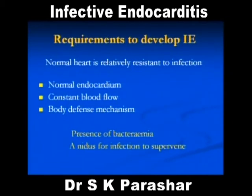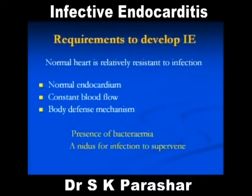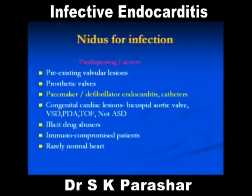There have to be two important things: a presence of bacteremia — unless there is a bacteremia, the bacteria won't come — and there should be a source or a nidus of infection. There should be two things: a source of infection and somewhere that infection can attach. The nidus, most importantly, is a pre-existing valvular lesion. That is why infective endocarditis is most common in valvular heart disease.